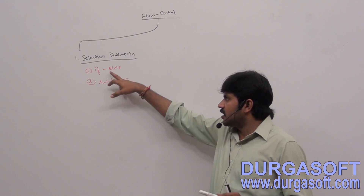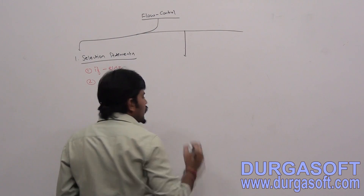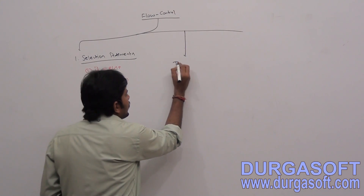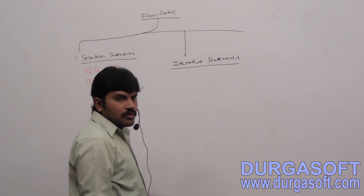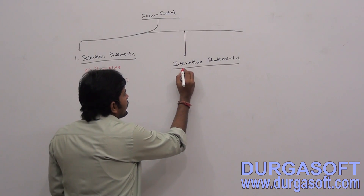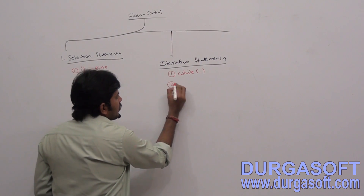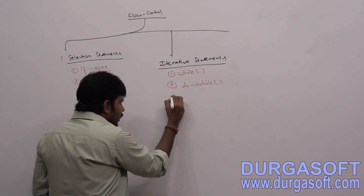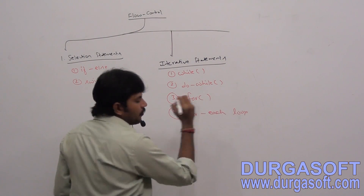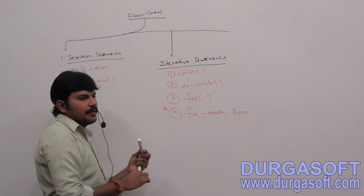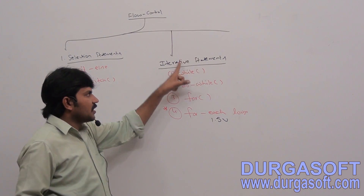In Java, there are two selection statements: if-else and switch statement. Next, there are some statements which are going to be executed repeatedly, iteratively — such statements are called iterative statements. The iterative statements in Java are: first, while loop; second, do-while; third, for loop; and fourth, for-each loop. The for-each loop is new, introduced in Java 1.5 version. A group of statements executed iteratively — that's nothing but iterative statements.